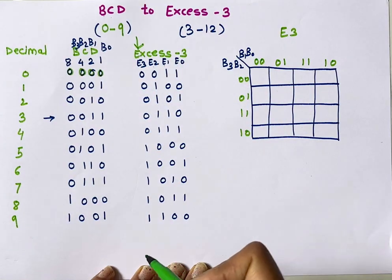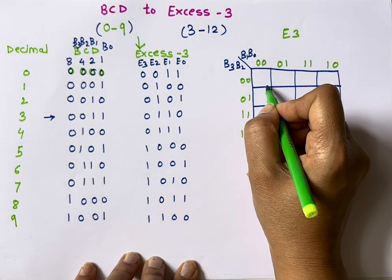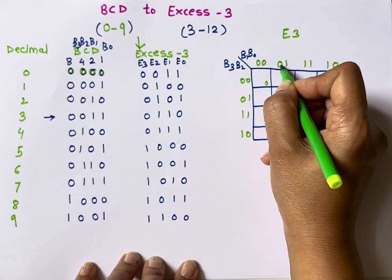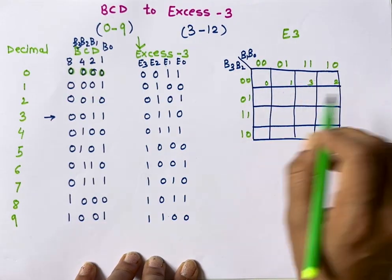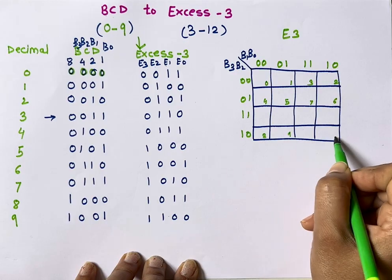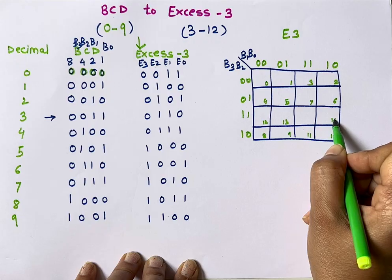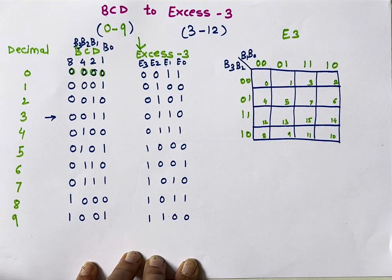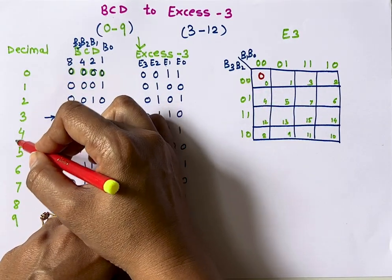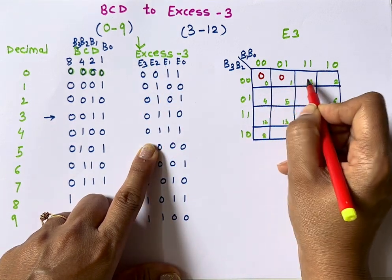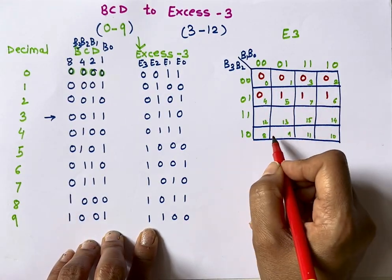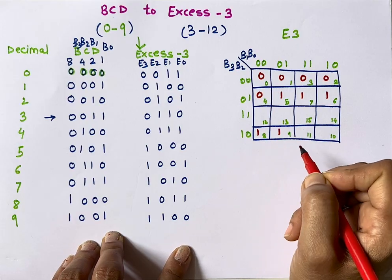We now place values of E3 into the K-map. The cell numbers go 0, 1, 2, 3, ... up to 15. For decimal values 0 to 4, E3 is 0 — so we place 0 in those cells. For decimal values 5 to 9, E3 is 1 — so we place 1 in those cells. The remaining cells (10 to 15) are don't care conditions.